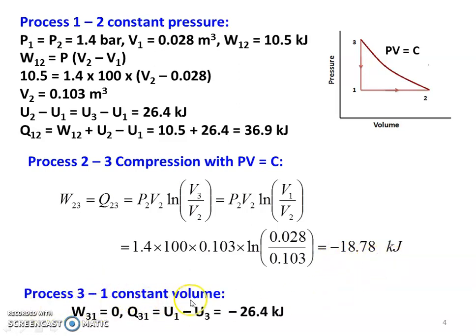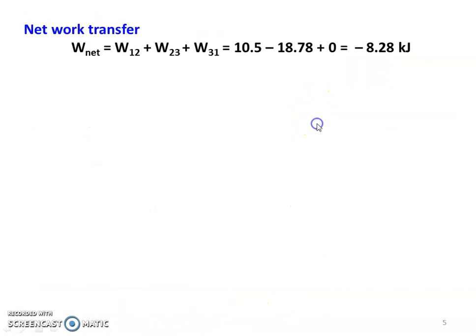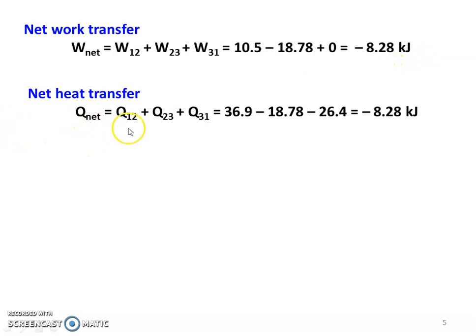For process 3 to 1, constant volume process, W31 equal to 0. Q31 equal to U1 minus U3 equal to minus 26.4 kilojoules. Now, net work transfer W12 plus W23 plus W31 equals 10.5 minus 18.78 plus 0 equals minus 8.28 kilojoules. Net heat transfer Q12 plus Q23 plus Q31 equals 36.9 minus 18.78 minus 26.4 equals minus 8.28 kilojoules. Net heat transfer equals net work transfer — proved.